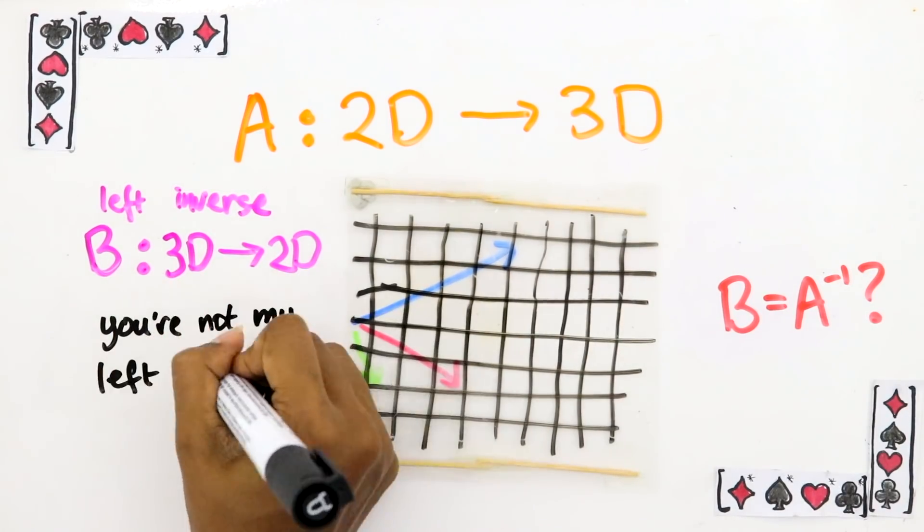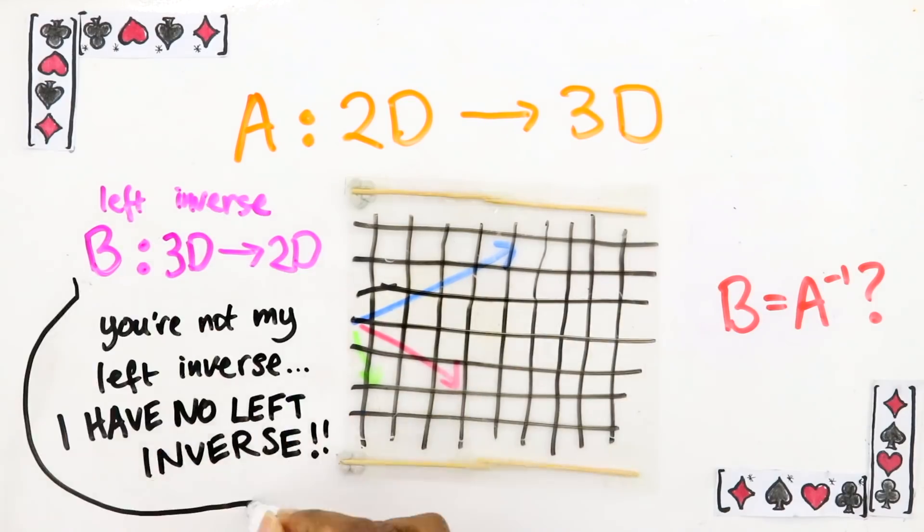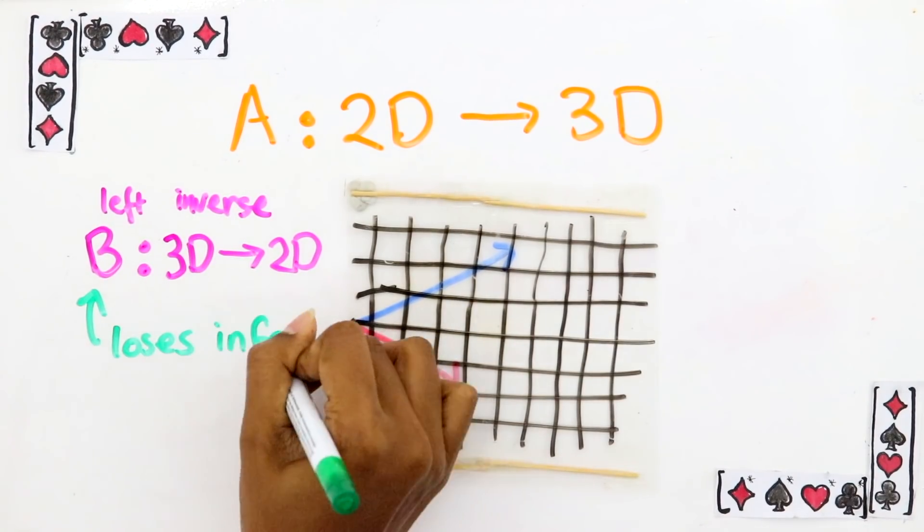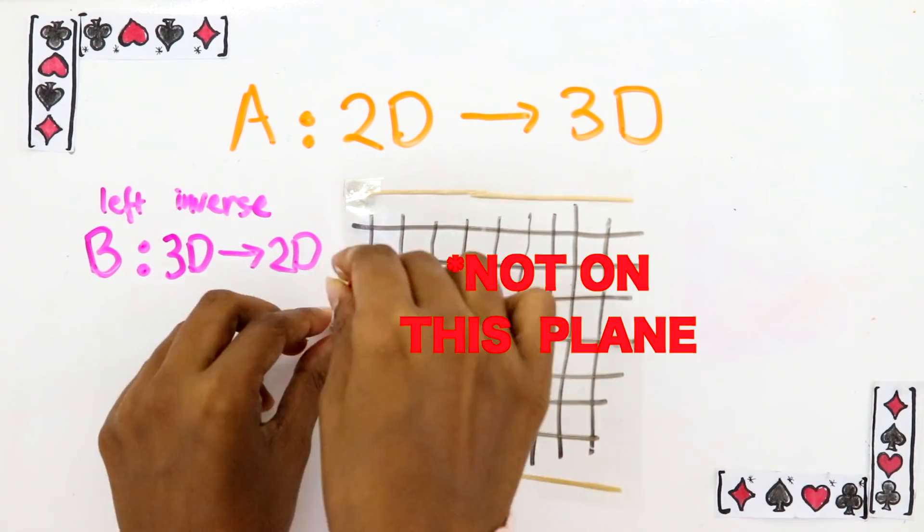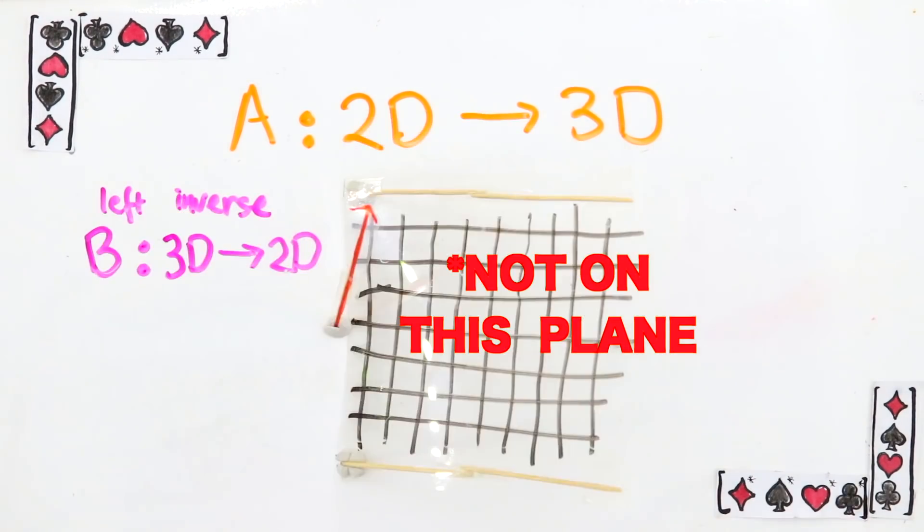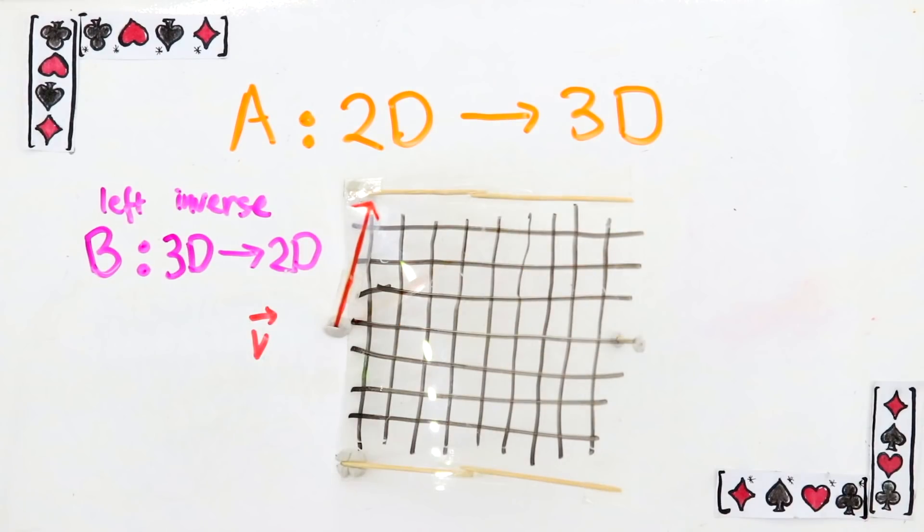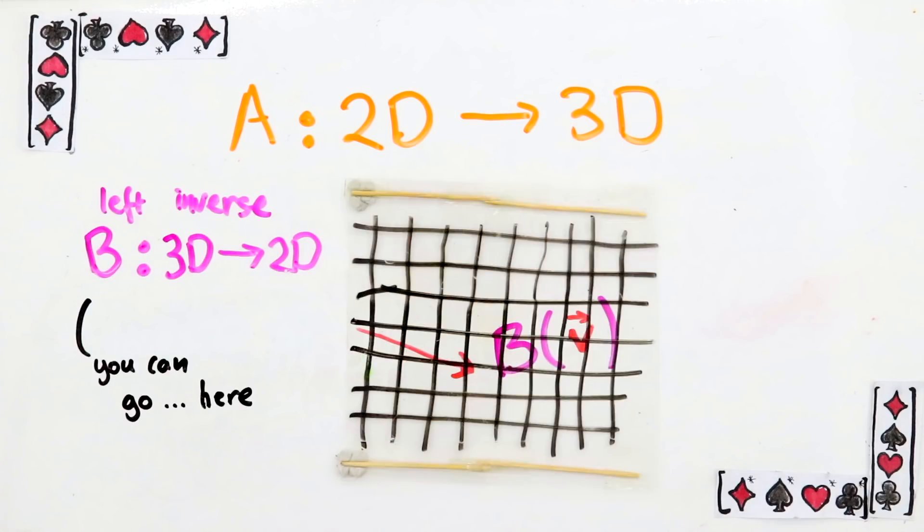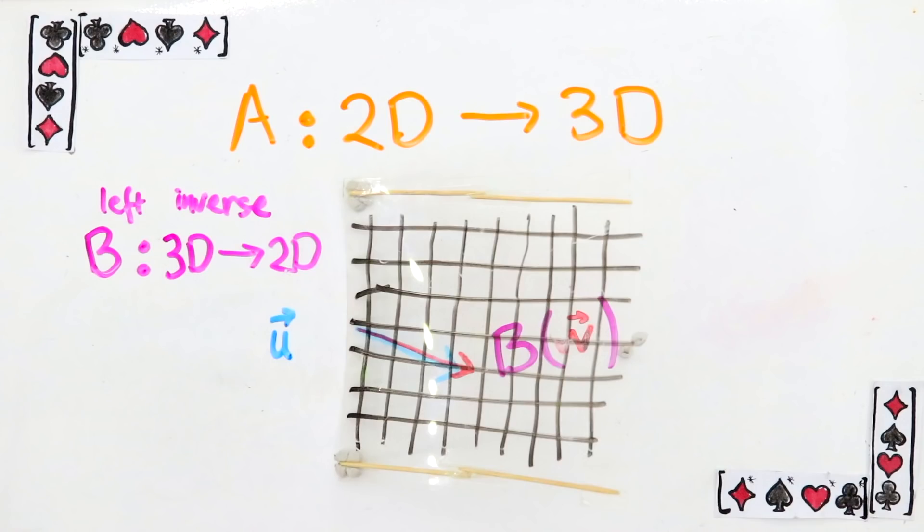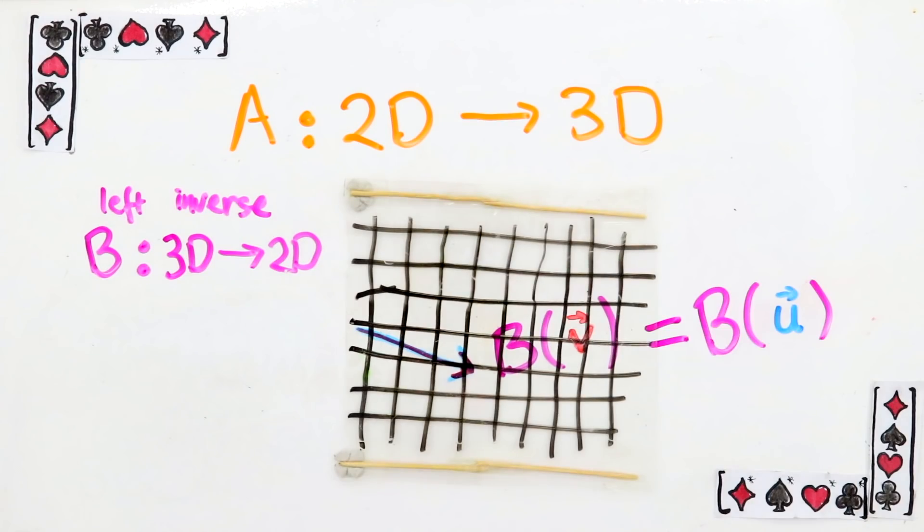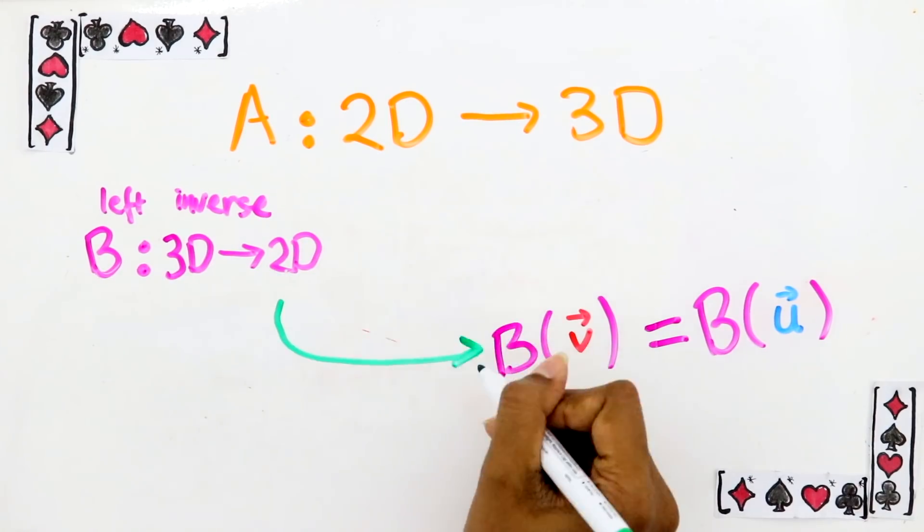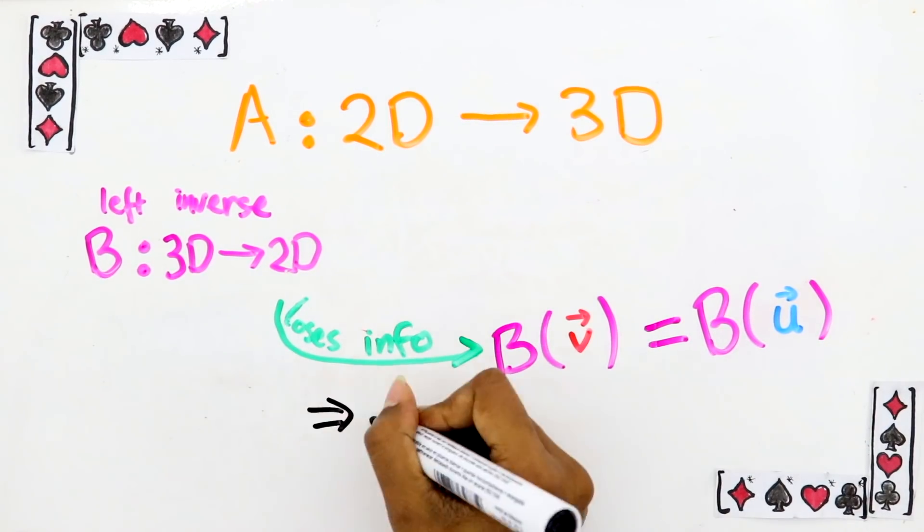The answer is no. B has no left inverse. We'll show that by showing that B loses information. First, pick any 3D vector that's on this plane. B has to send it to some 2D vector, so let's just say it's here. But there's another 3D vector that's already been sent there. It's this vector U that's on the plane. So BU is equal to BV. Hence, B loses information and doesn't have a left inverse.